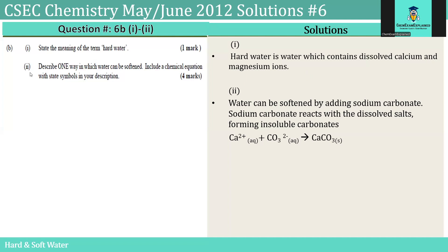6B part 2. Describe one way in which water can be softened. Include a chemical reaction with state symbols in your description. Water can be softened by adding sodium carbonate. Sodium carbonate reacts with the dissolved salts, forming insoluble carbonates. This is an ionic equation showing what takes place to form the insoluble calcium carbonate.